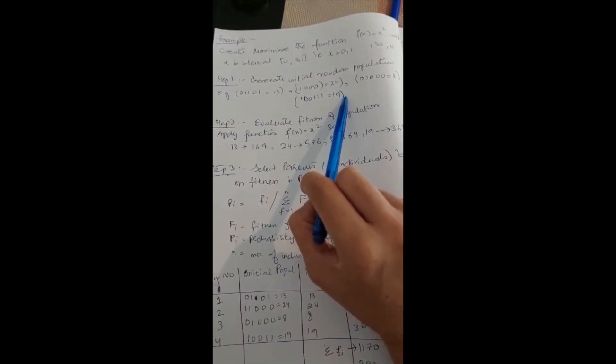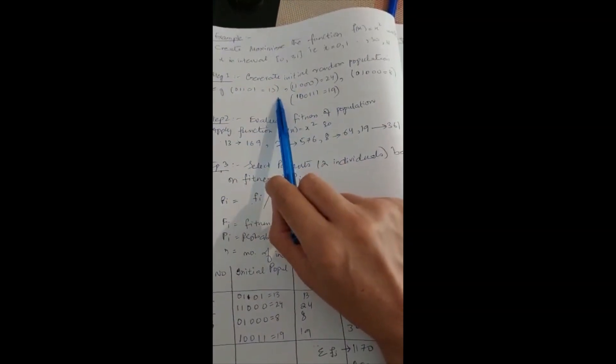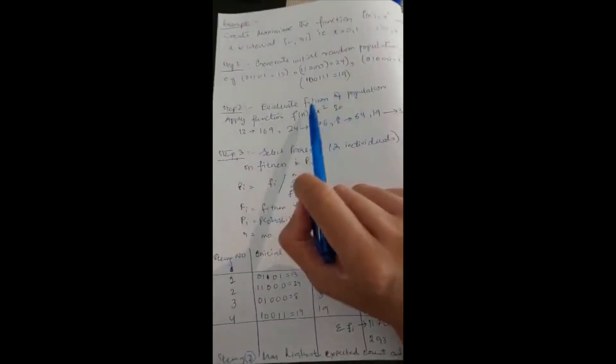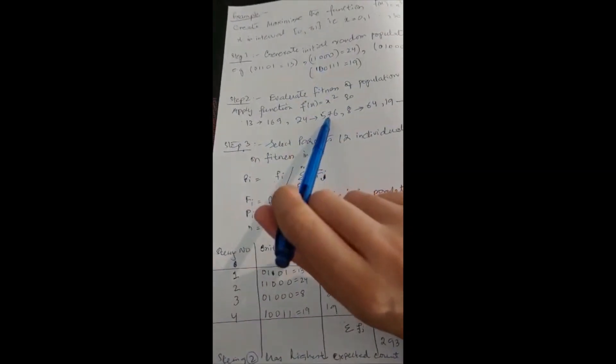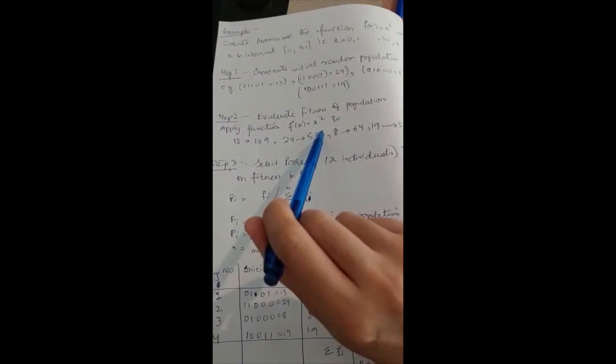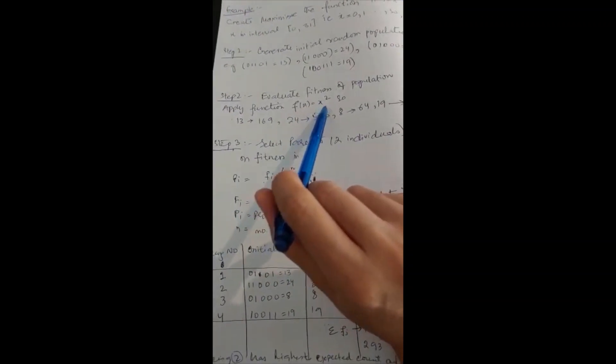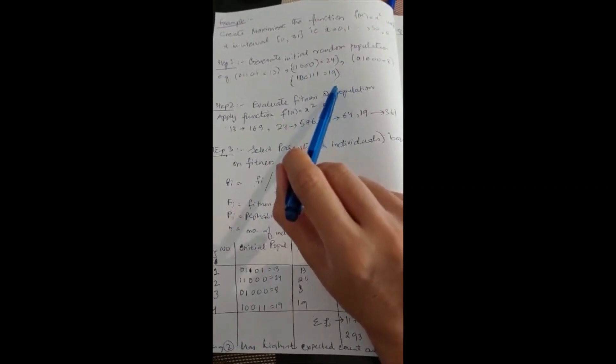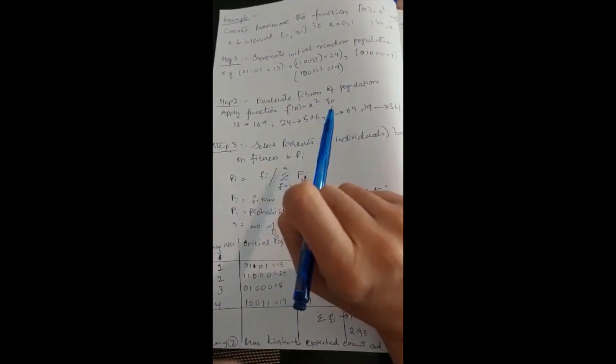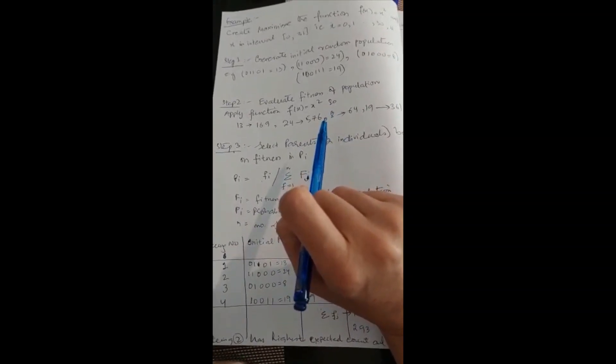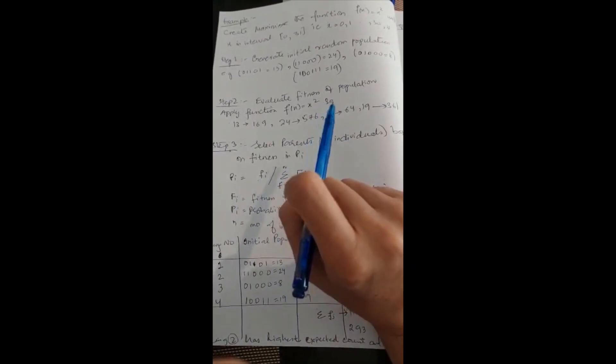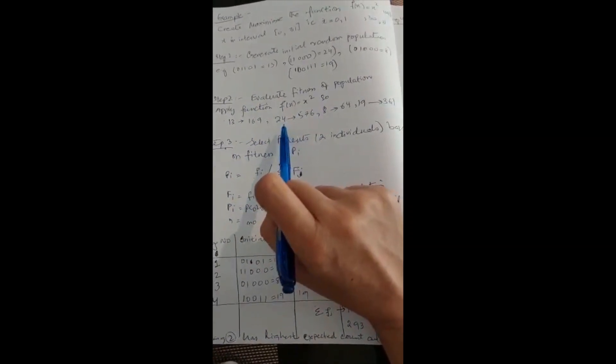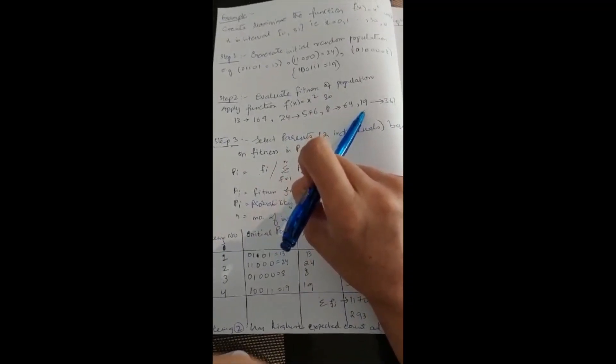We choose numbers randomly: 13, 24, 8 or 19. These numbers come in binary. Step two: evaluate fitness of population and apply the function f(x) = x squared. We have generated 4 strings. This is our choice. We can generate 5 strings. We will add them one by one. We have taken 13 squared is 169, 24, 8 and 19. We have saved the number of squares.